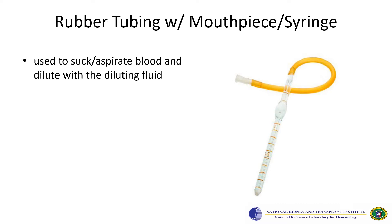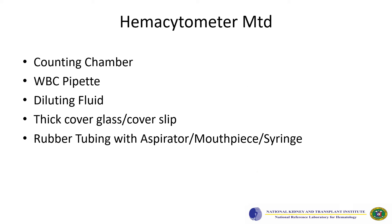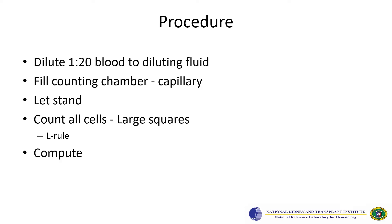The rubber tubing with the mouthpiece is used to suck or aspirate blood and dilute it with the diluting fluid. The mouthpiece was later replaced by the syringe due to health safety reasons. To summarize, the tools used for the hemocytometer method are the counting chamber, WBC pipette, diluting fluid, thick cover glass or coverslip, and the rubber tubing with mouthpiece, later replaced by the syringe.